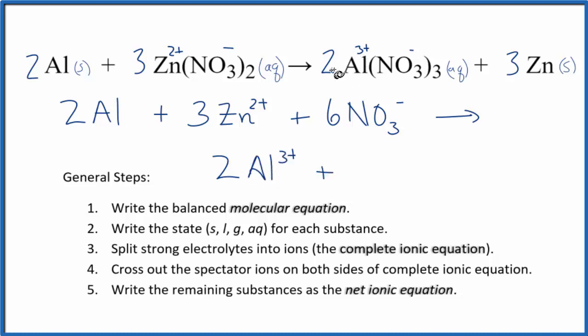Plus two times the three nitrates, six nitrate ions, and then the three zincs. So this is what we call the complete or total ionic equation.